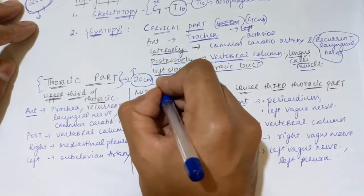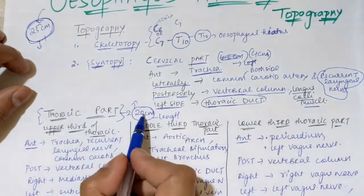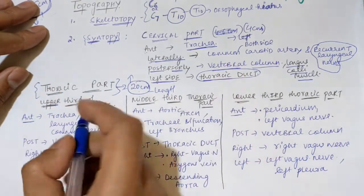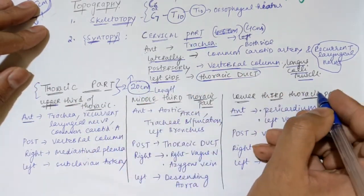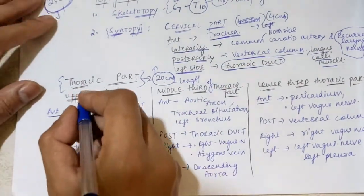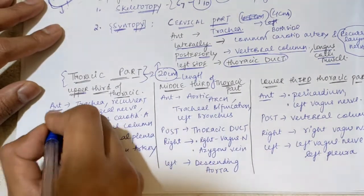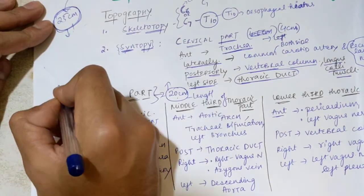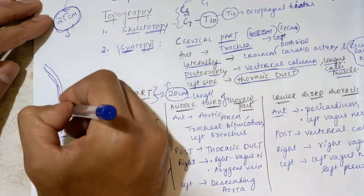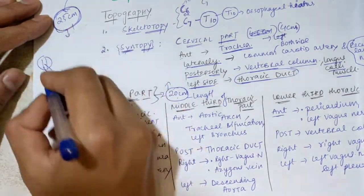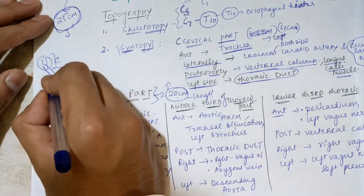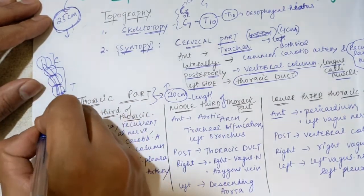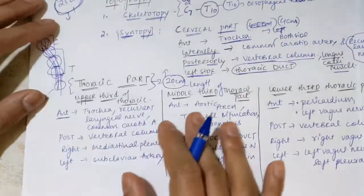Now the thoracic part — this is 20 centimeters in length, out of the total 25 centimeters. It is further divided into three sub-parts: upper, middle, and lower third of the thoracic esophagus. The abdominal part is the lowest segment. The topography differs for each of these three parts.